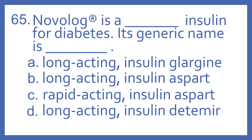Number 65. NovaLog is a blank insulin for diabetes. Its generic name is blank. A. Long-acting insulin glargine. B. Long-acting insulin aspart. C.